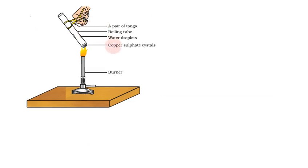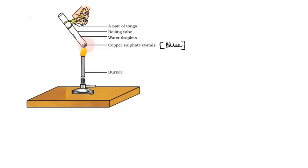Here is an activity. In this activity, there are copper sulfate crystals. We have a test tube with a copper sulfate crystal. This is blue in color. We will heat the test tube using the burner. We will show you water droplets and the water present in the crystal structure.